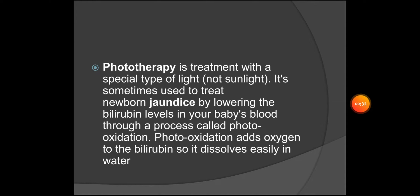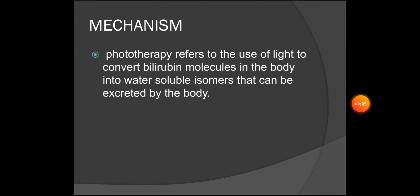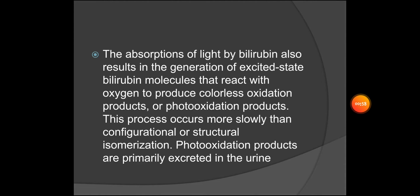Phototherapy treats neonatal jaundice by lowering bilirubin levels in the baby's blood through a process called photo oxidation. Photo oxidation adds oxygen to bilirubin so it dissolves easily in water. More specifically, phototherapy uses light to convert bilirubin molecules into water-soluble isomers that can be excreted by the body. The absorption of light by bilirubin also results in the generation of excited state bilirubin molecules that react with oxygen.